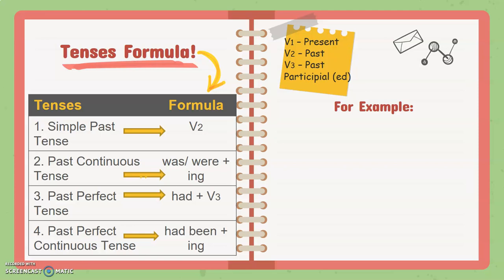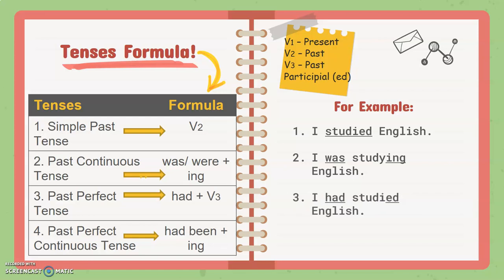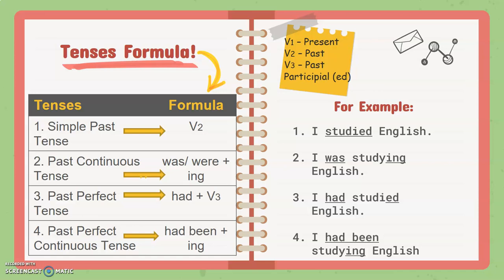Let's see with examples. First: I studied English — the past tense of 'study' is 'studied', so we used V2 form. Second: I was studying English — 'was' is used with ING, so it is an example of past continuous tense. Third: I had studied English — 'had' is used with V3, the past participle form, so it is an example of past perfect tense. Fourth: I had been studying English — 'had been' is used with ING, so it is an example of past perfect continuous tense.